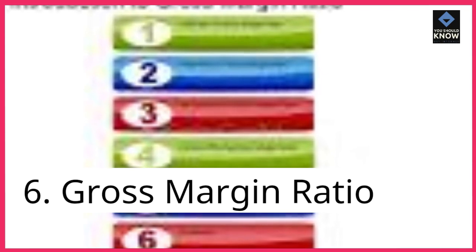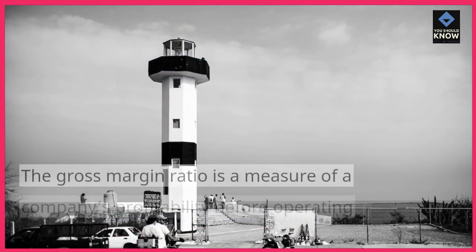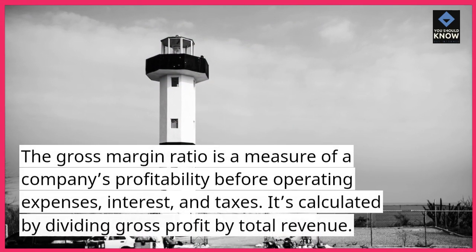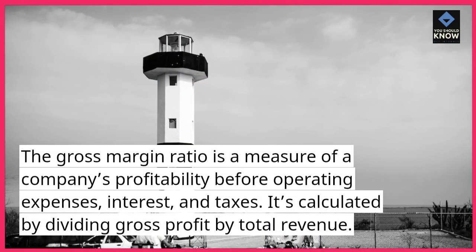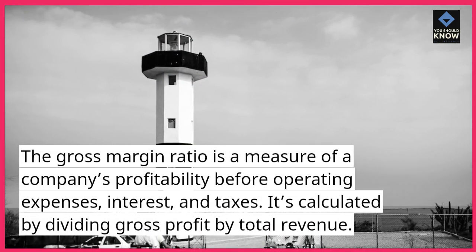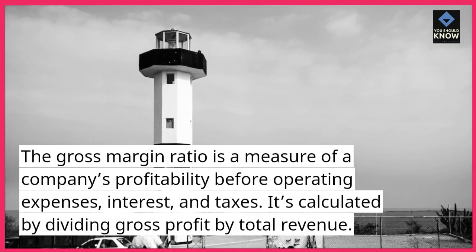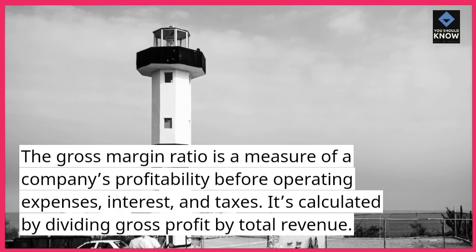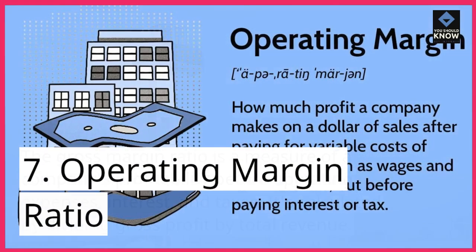6. Gross Margin Ratio. The Gross Margin Ratio is a measure of a company's profitability before operating expenses, interest, and taxes. It's calculated by dividing gross profit by total revenue.